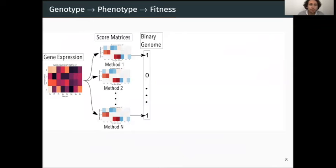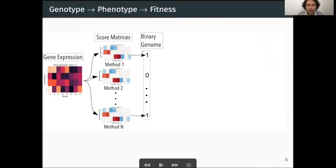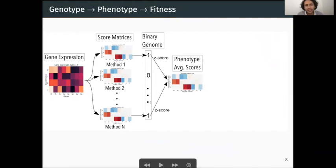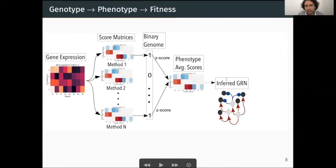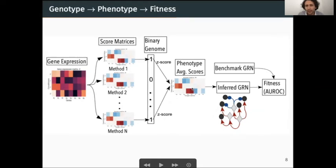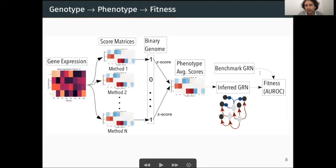Now let me show you how we build this population of good ensemble candidates. We first take the gene expression matrix and compute the score matrices for each of the 17 methods in Grenadine. Each individual of the genetic algorithm has a binary genome, where a gene equal to one means that method is selected. We then standardize the scores of the chosen methods using a z-score and compute the average score. This average score is used to infer the GRN and compare it to the benchmark GRN to compute the fitness — i.e., the quality of the ensemble.